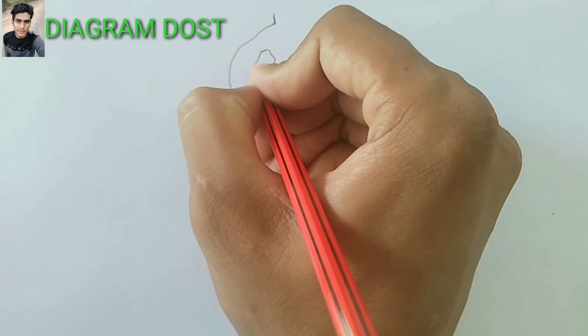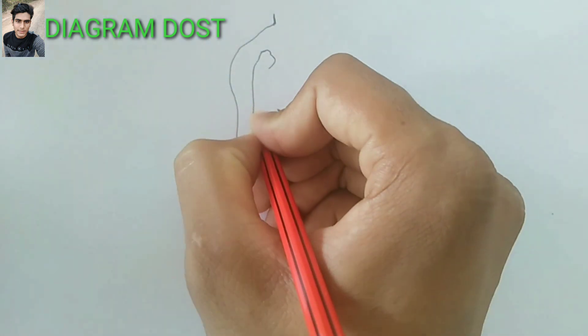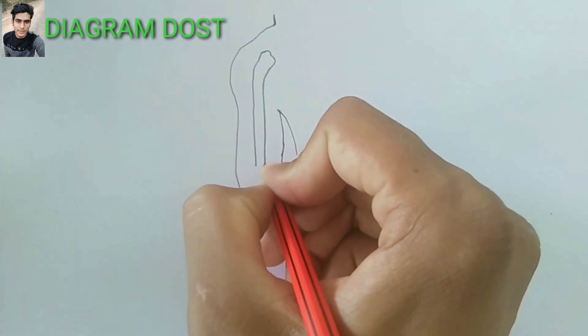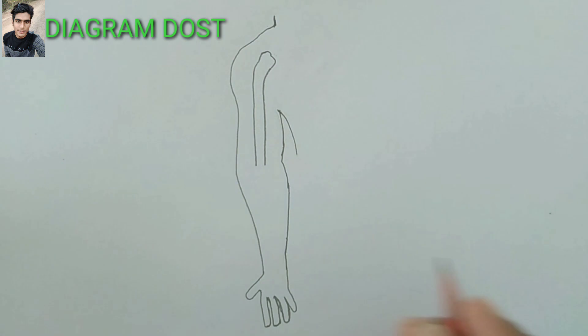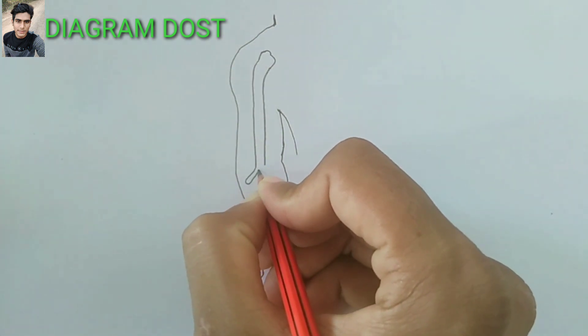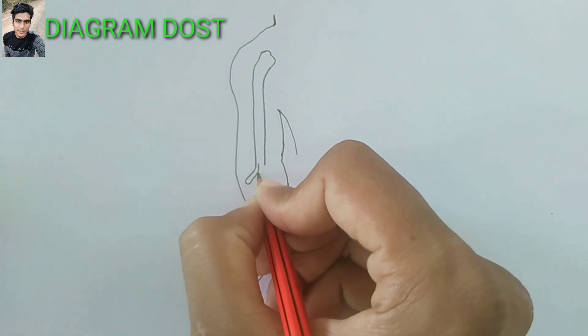Now draw a straight line, make one more line parallel to this. Now I am drawing the end of humerus bone which will make elbow joint with the radial bone.